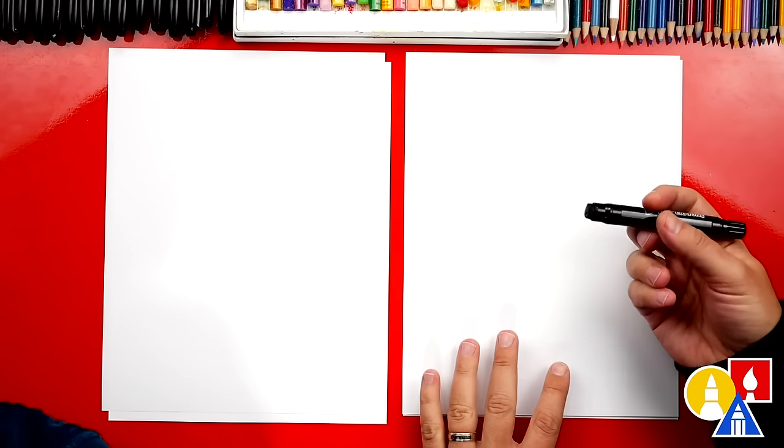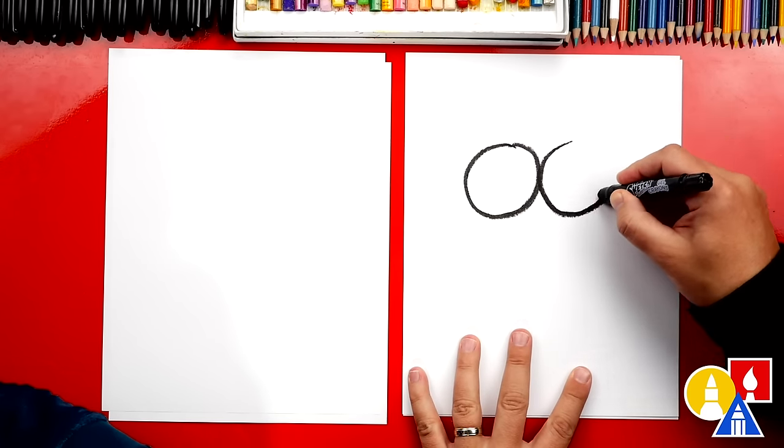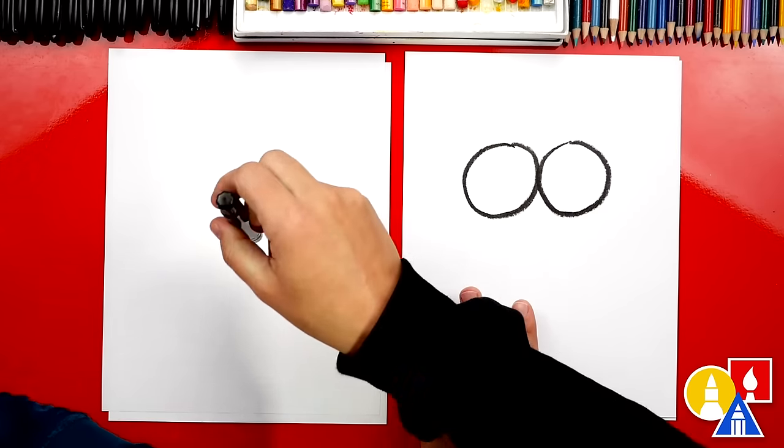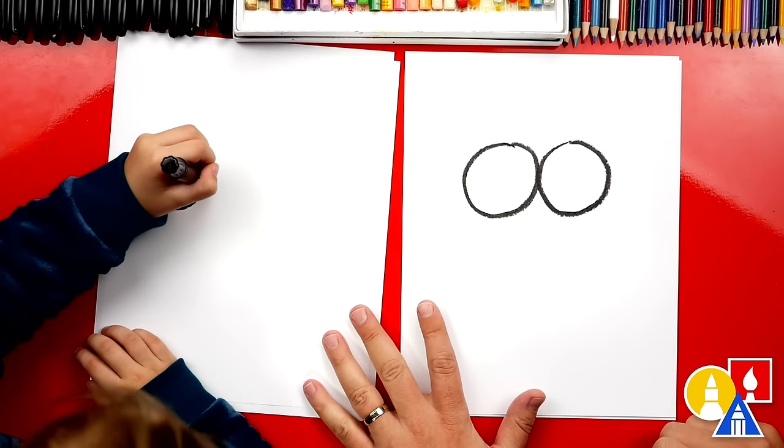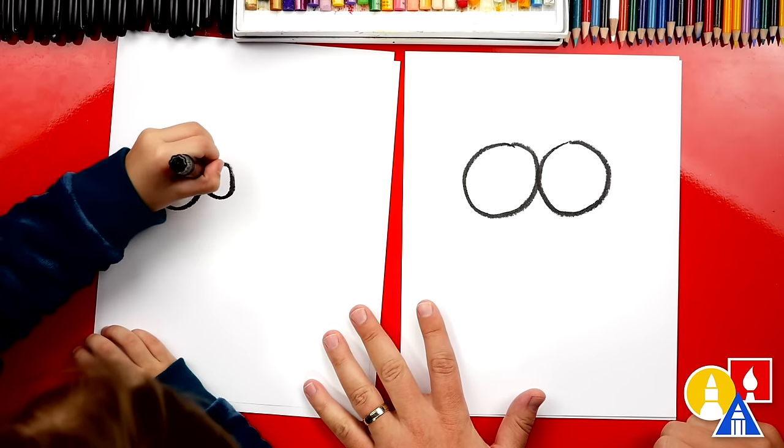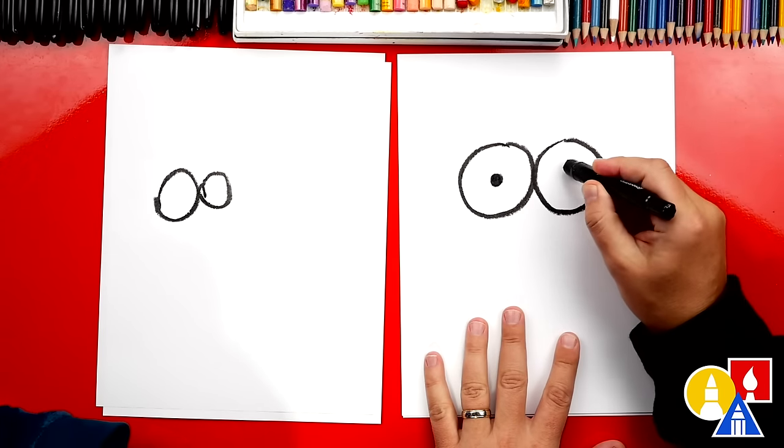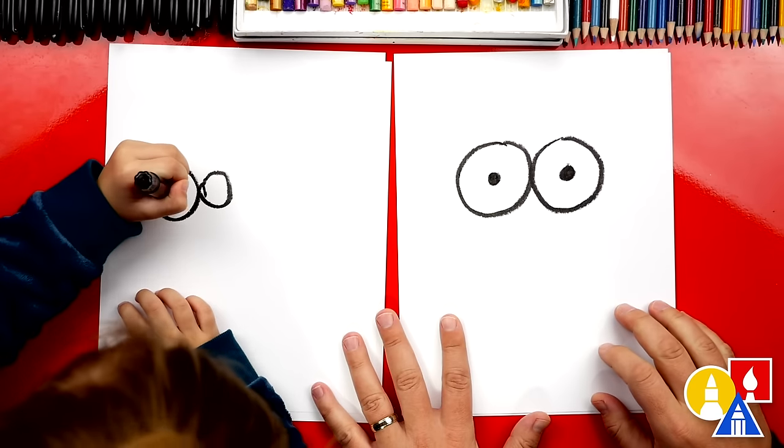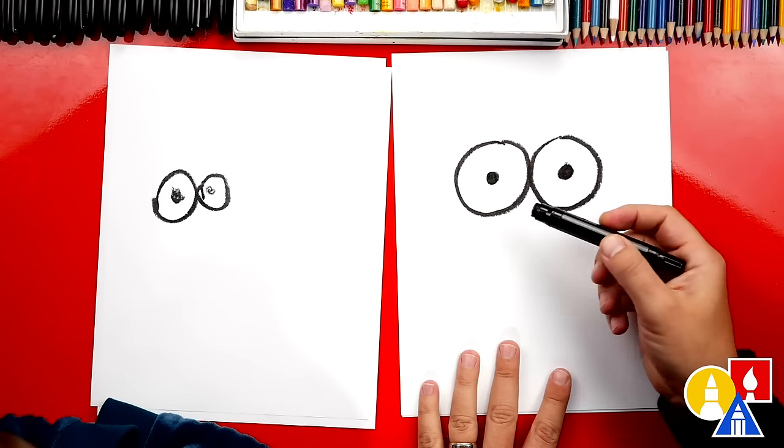We're first going to use our black crayon, and we're going to draw two circles for the eyes. And look, I drew them touching too. Yeah. And then, do you want to draw two circles for the eyes? Yeah. Draw them right? Yes. I like it. Oh, and that one's a little one. I like it. Then we're going to draw little circles on the inside to finish the eyes. You can color them in too. Yeah, a little circle. There you go. And one more. I like how small your eyes are.